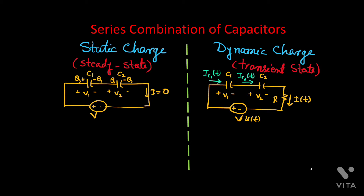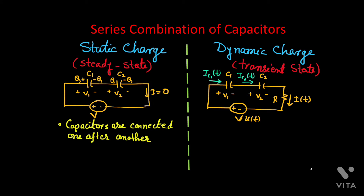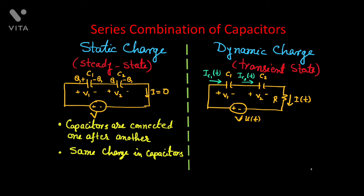For static charge, the capacitors are connected one after another as shown here, and the same charge will be found in each capacitor. This is the condition for series combination. In series combination of resistors the current is the same, but for capacitors the charge should be the same in each capacitor. This charge Q equals C1·V1 and equals C2·V2, since Q = C·V for a capacitor.